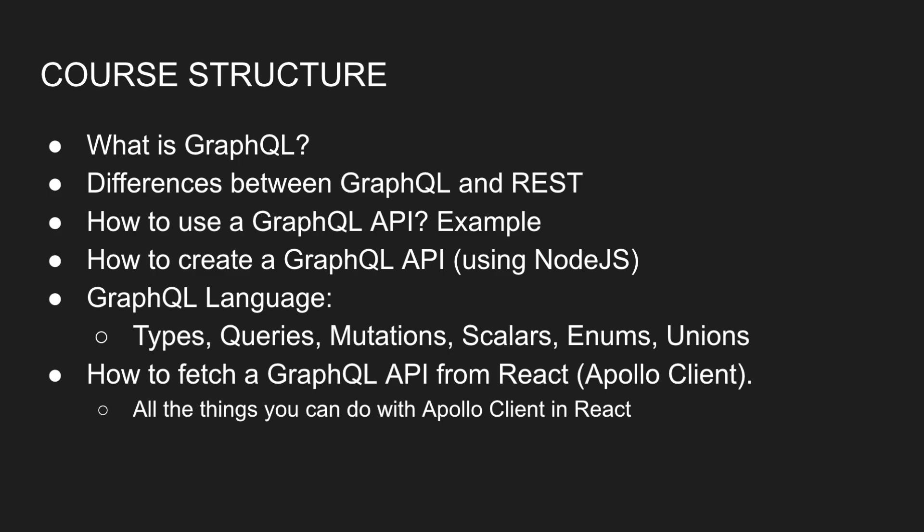I also want to talk about how to actually create a GraphQL API, and for that I'm going to be using Node.js, JavaScript, and Apollo Server, which is the library — the wrapper around our API for GraphQL to serve GraphQL in our application. And when we start building that, I'm going to teach you guys a lot about the actual GraphQL language: what are types, queries, mutations, what are scalars, what are enums, unions, all that kind of stuff.